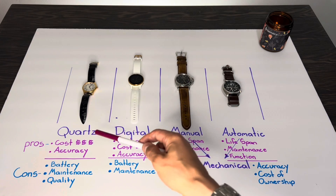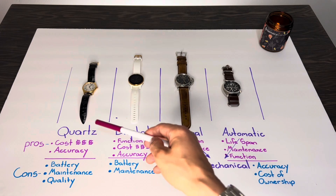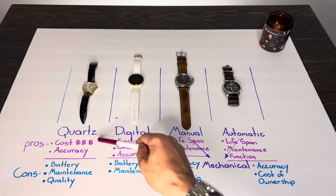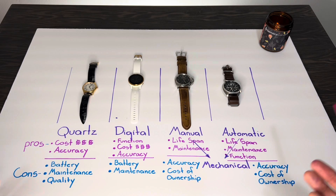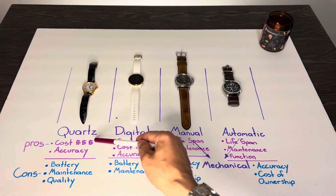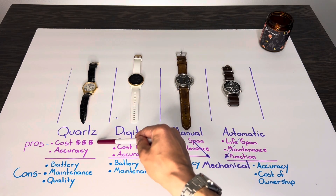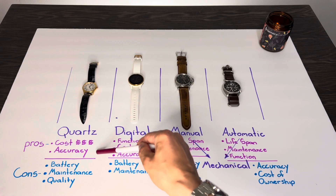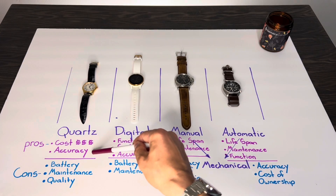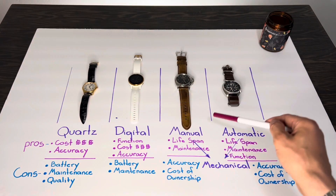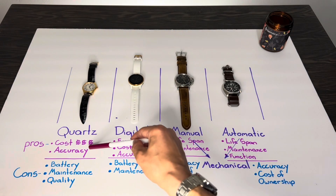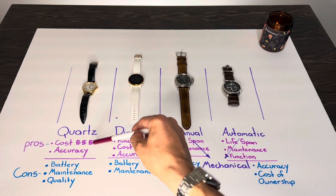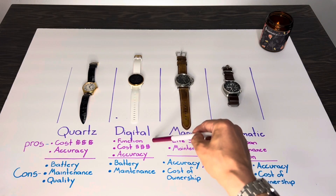Now let's look at the pros and cons of each. The biggest pro of a quartz watch is definitely cost — because of mass production, a quartz watch is available to the general public for as low as twelve dollars. Accuracy is also going to be much better than your traditional manual or automatic watch, thanks to the technology behind a quartz movement.